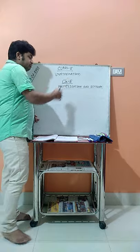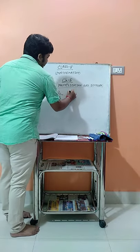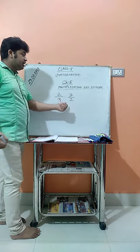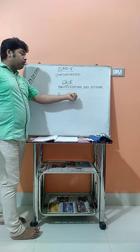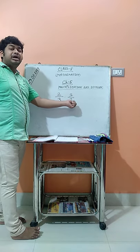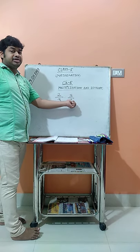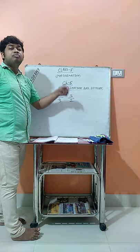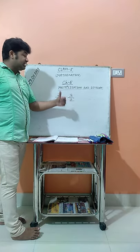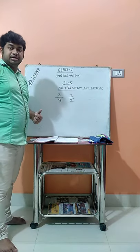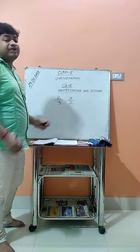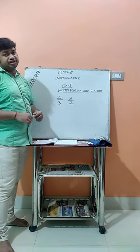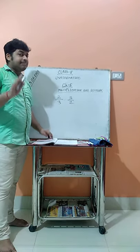Now if it is written as 3/2 — the upper number is the numerator and the lower number is the denominator — when the numerator is larger than the denominator, this type of fraction is known as the improper fraction.